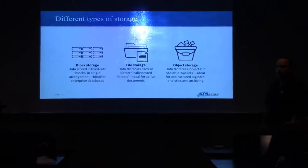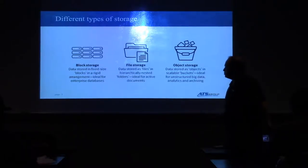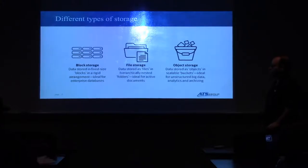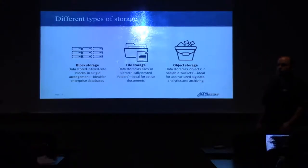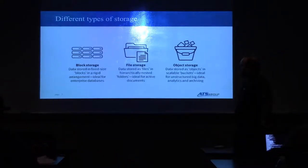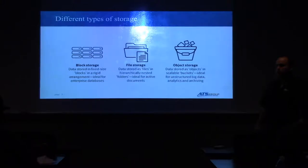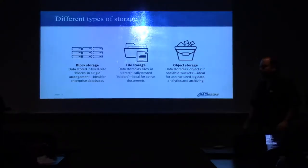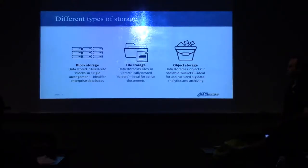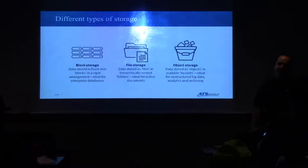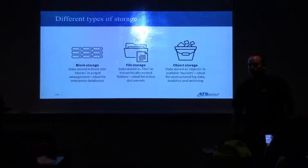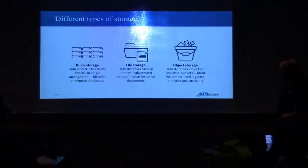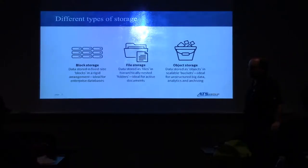You can quantify storage into three different types: block storage, file storage, and object storage. Block storage stores data in fixed-size blocks in a rigid arrangement — ideal for enterprise databases, highly performant and serialized workloads. File storage is something everyone's familiar with: there's a magical drive mapped to everyone's laptop and they all dump their files into it. Object storage stores data as objects in scalable buckets — ideal for unstructured big data, content files, pictures, videos, even snapchats of your cats. A lot of people use it for analytics and archiving.